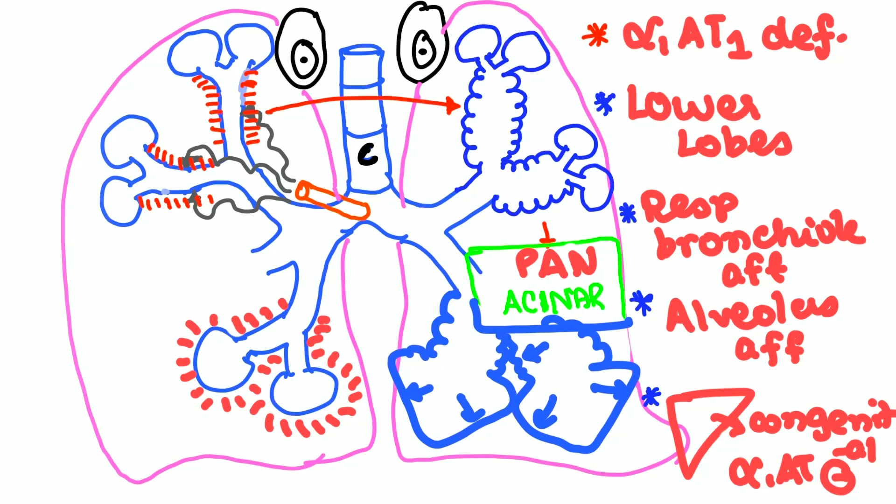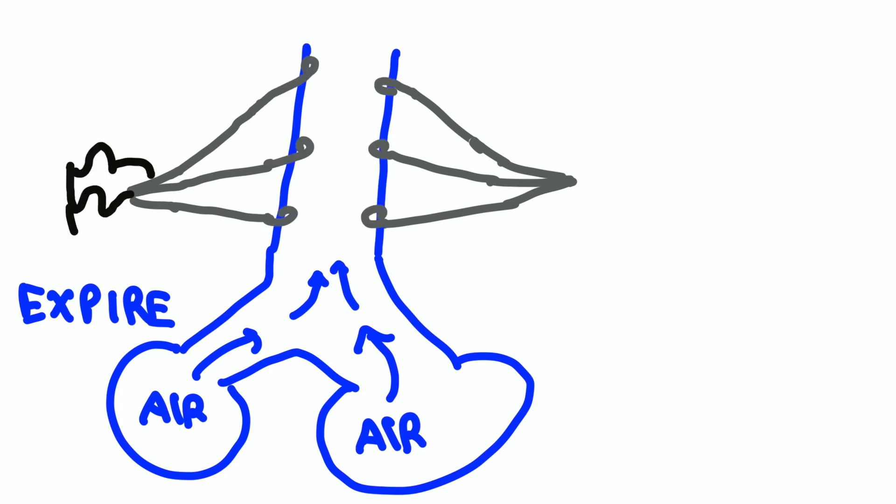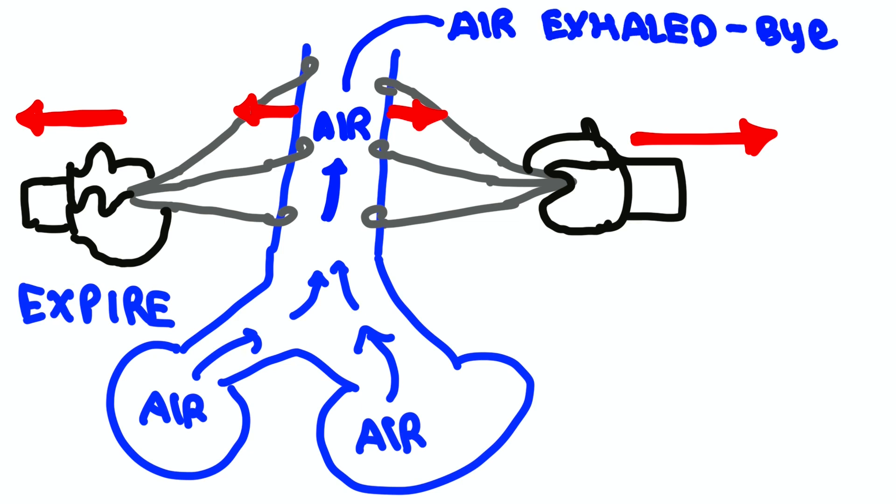Next important concept: during expiration, the bronchial lumen should not collapse. For that, elastic fibers are there which will prevent the collapse so that the air escapes out.